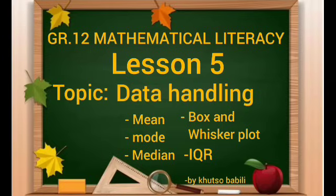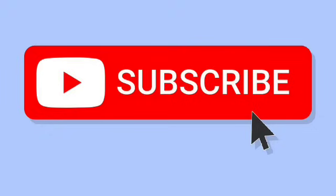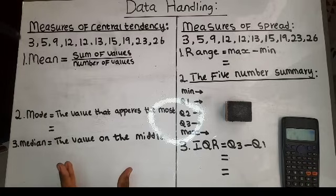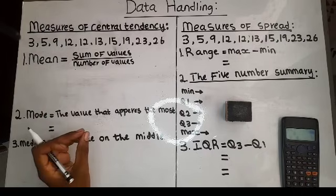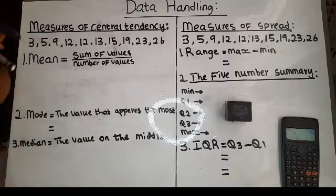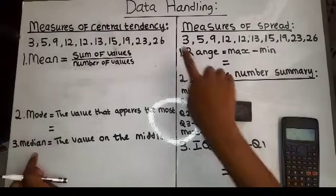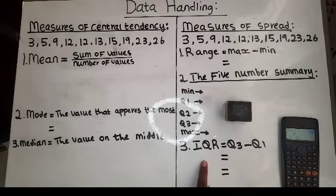Hello and welcome to video lesson five. We are going to be working specifically with data handling. Data handling has two measures of summarizing data: measures of central tendency and measures of spread. On measures of central tendency we have the mean, the mode, and the median. On measures of spread we have the range, the five number summary, and the interquartile range.